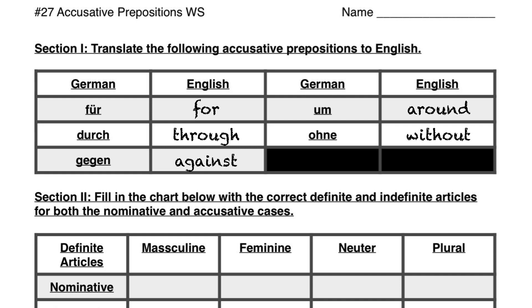Um and gegen are both used with time. Um means 'at' and gegen means 'around' when used with time. Whereas whenever you're talking about basically anything other than time, um means 'around.' And gegen, when talking about anything other than time, means 'against.'